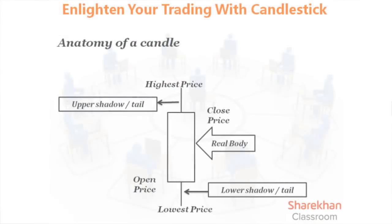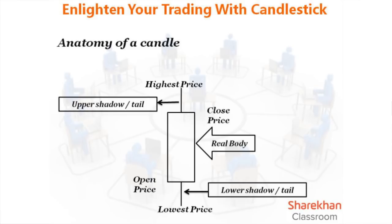A candlestick has a rectangular body with a vertical line above and below it. At one end of the rectangular body you have the open price; at the extreme high end you have the highest price; at the lowest end you have the lowest price; and at the other end of the rectangular body you have the close price. This rectangular body is called the real body - the real essence of the price action. The vertical lines above and below are called shadows, tails, or wicks. The line above is the upper shadow and below is the lower shadow - these are called emotional extremes.